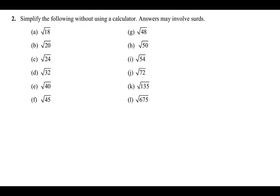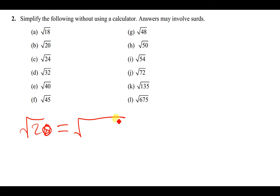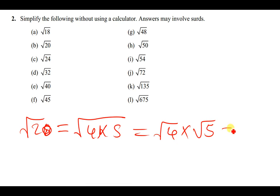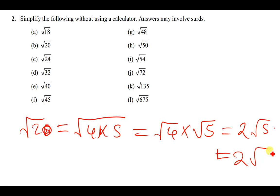The second one: the square root of 20 can also be written as the square root of 4 times 5. So the square root of 4 times 5 is just the same as the square root of 4 times the square root of 5. The square root of 4 is 2, and the square root of 5 remains as an irrational number. So the answer is simply 2√5.